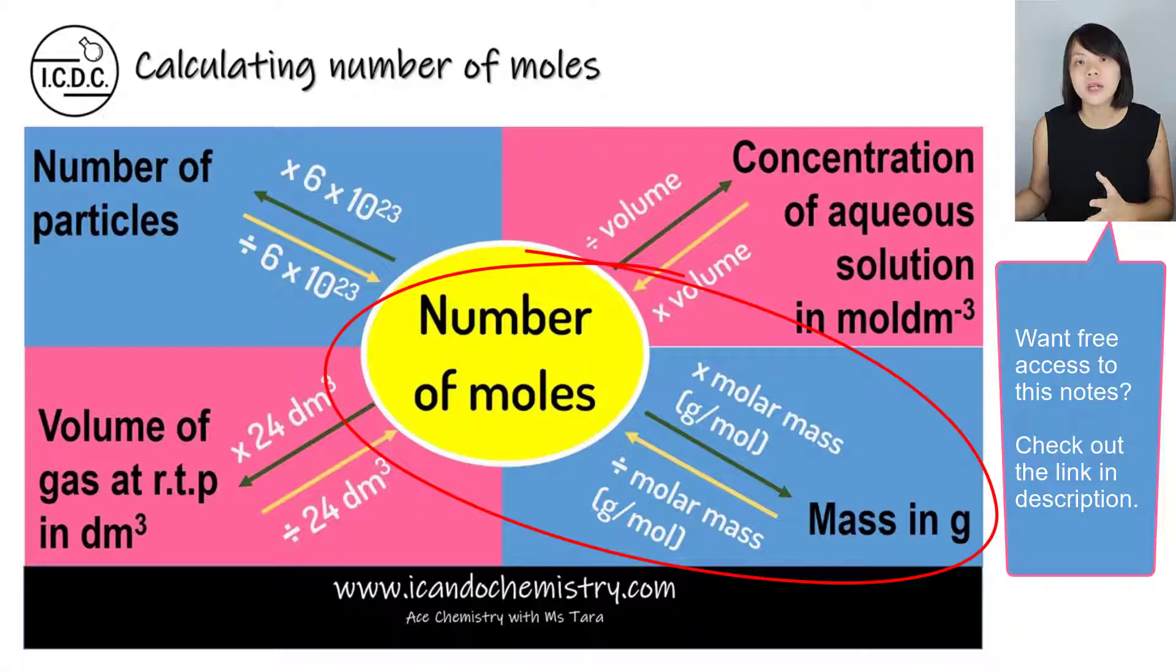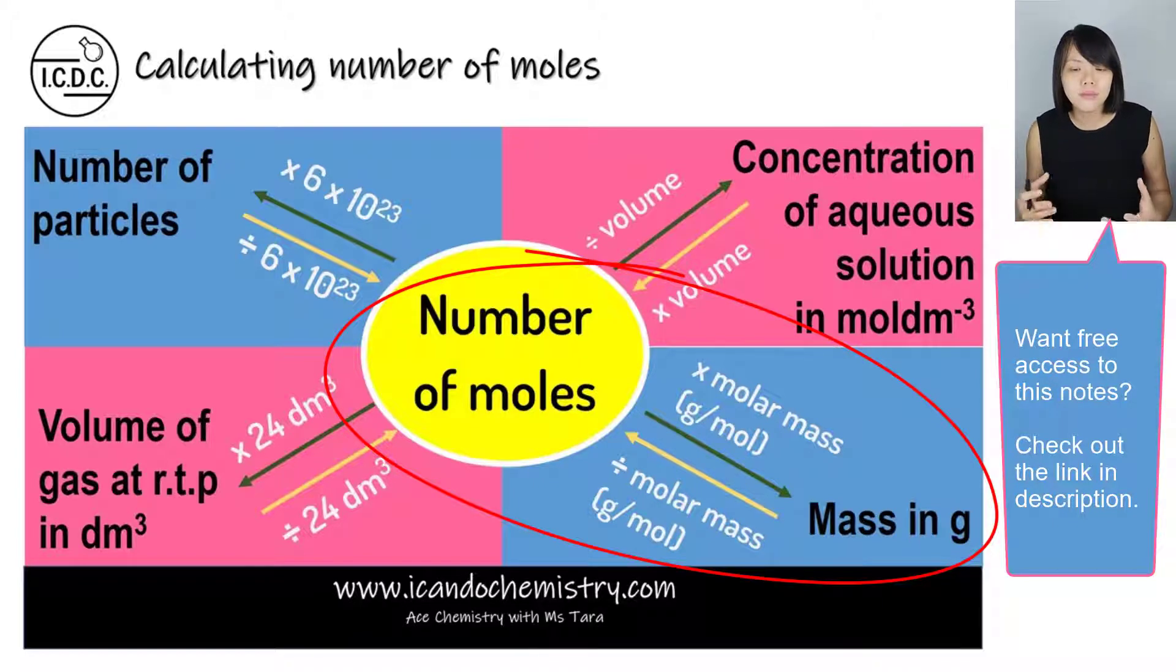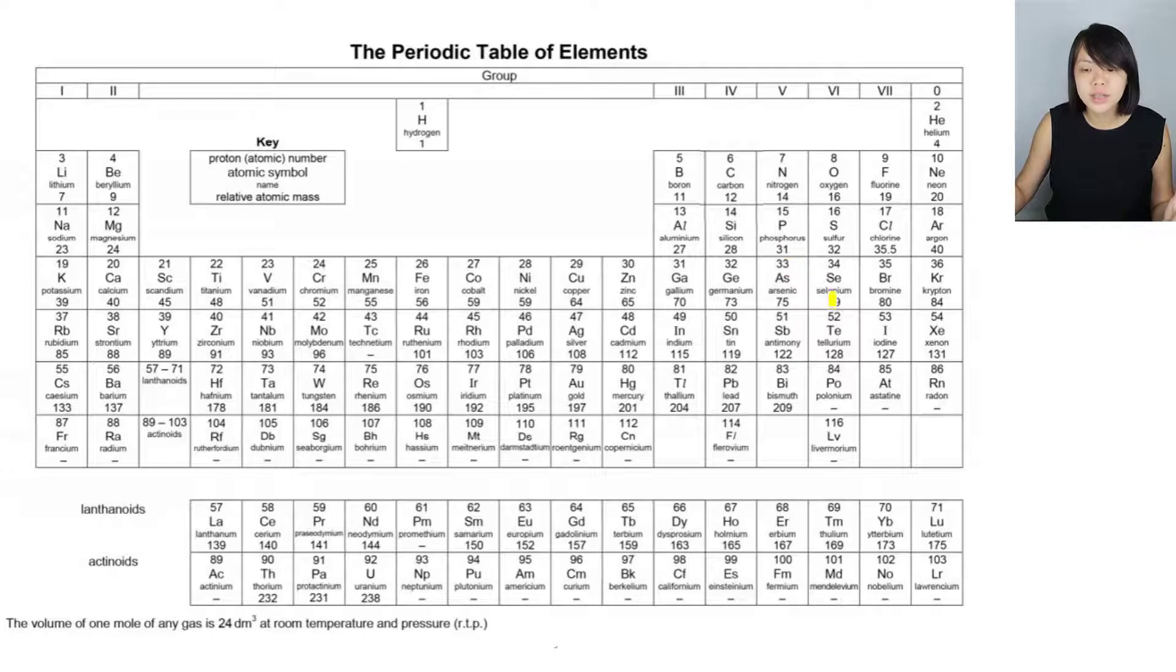Now we are focusing on this part over here. We are given mass in grams. So to work out the number of moles, we simply need to use the mass divided by the molar mass to determine the number of moles. Iodine is over here in the periodic table. It is in group 7, it is a halogen. So we know that halogens, they all exist as diatomic molecules. So iodine exists as I2.